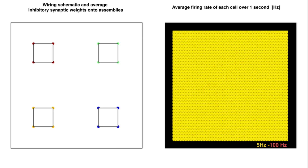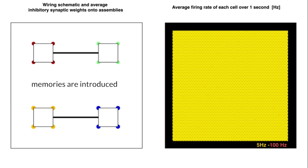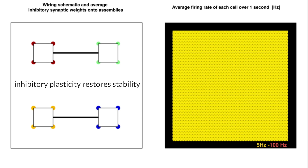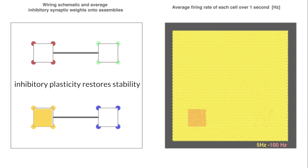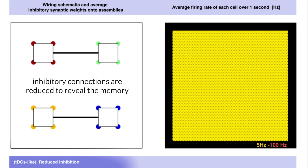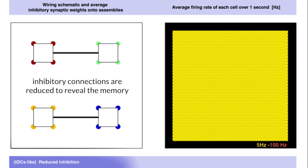You can see a simulation of our approach in this neural network model. If we activate the red cell assembly and plot the firing rate of each neuron in the network, you can see that after an association is introduced between the red and the green cell assemblies, we see co-activation. But this co-activation disappears after inhibitory plasticity restores stability. The effect of these new inhibitory connections can be revealed if we reduce the efficacy of all inhibition throughout the network. Now, when we stimulate the red cell assembly, the green cell assembly is once again co-active.